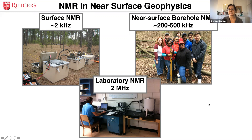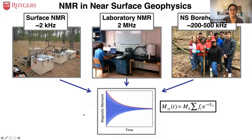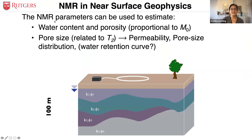No matter how we make these measurements, the signal we get back is always the same — an exponential decay characterized by a distribution of relaxation times and an initial signal magnitude. These NMR parameters can be used to estimate water content and porosity, which are proportional to the initial signal magnitude. The relaxation time distribution can be related to pore size, permeability, pore size distribution, and hopefully in future work, the water retention curve as well.